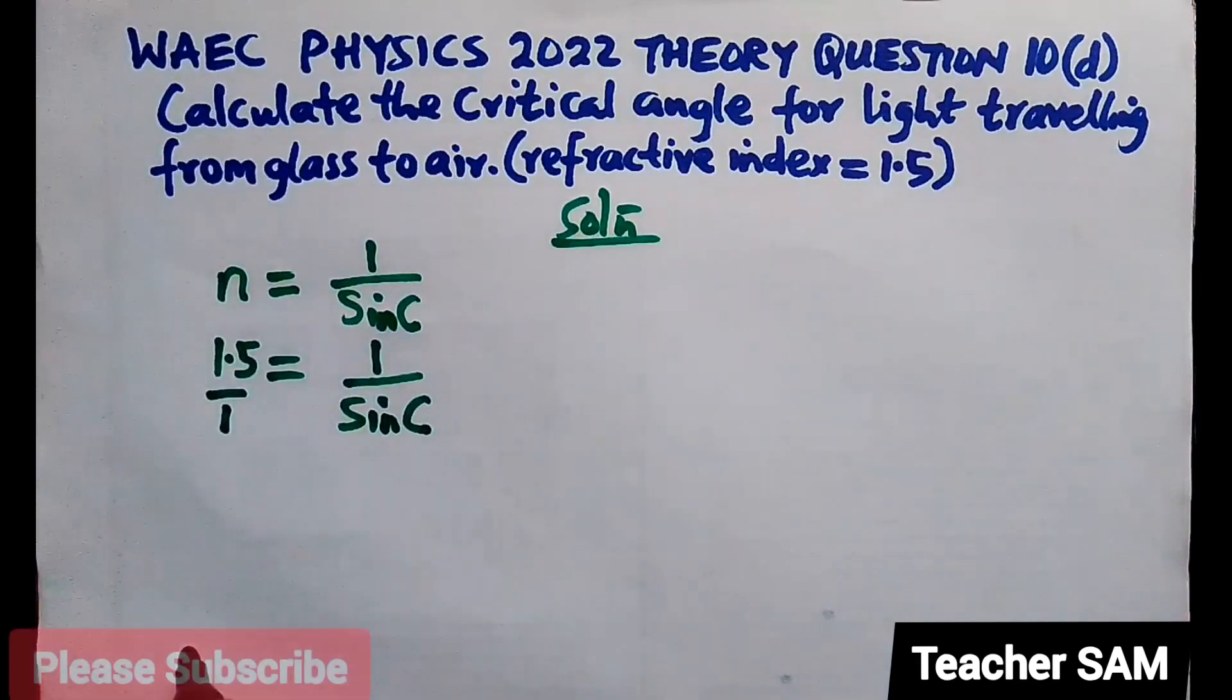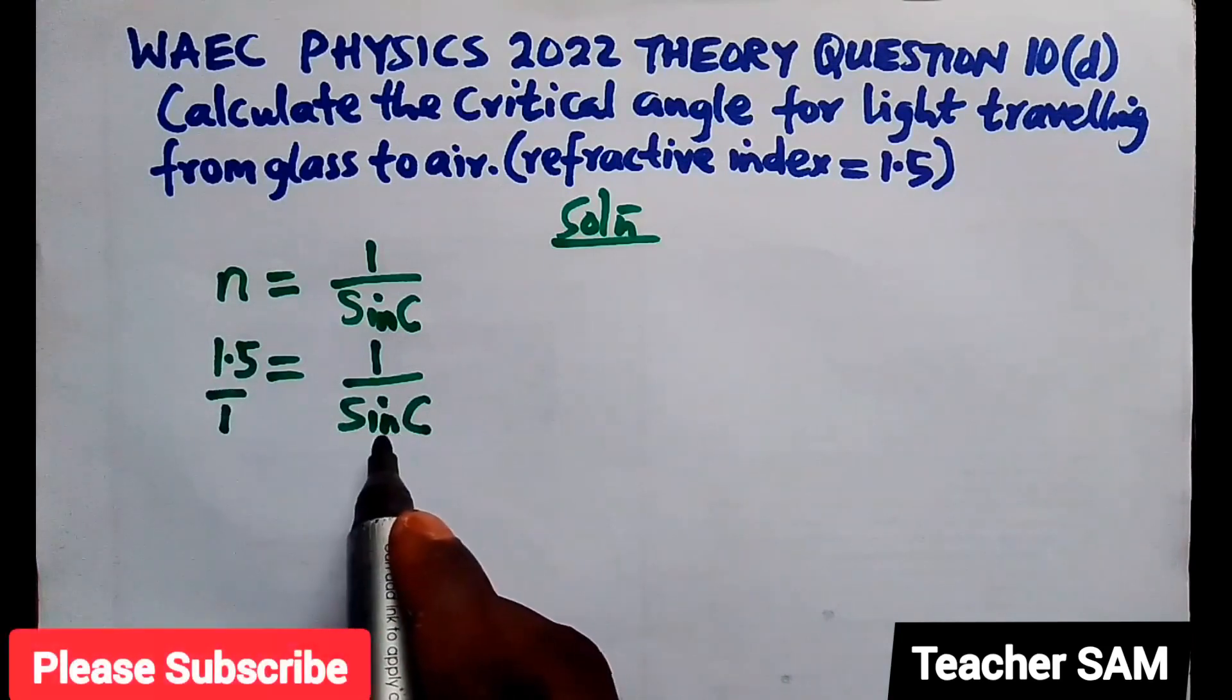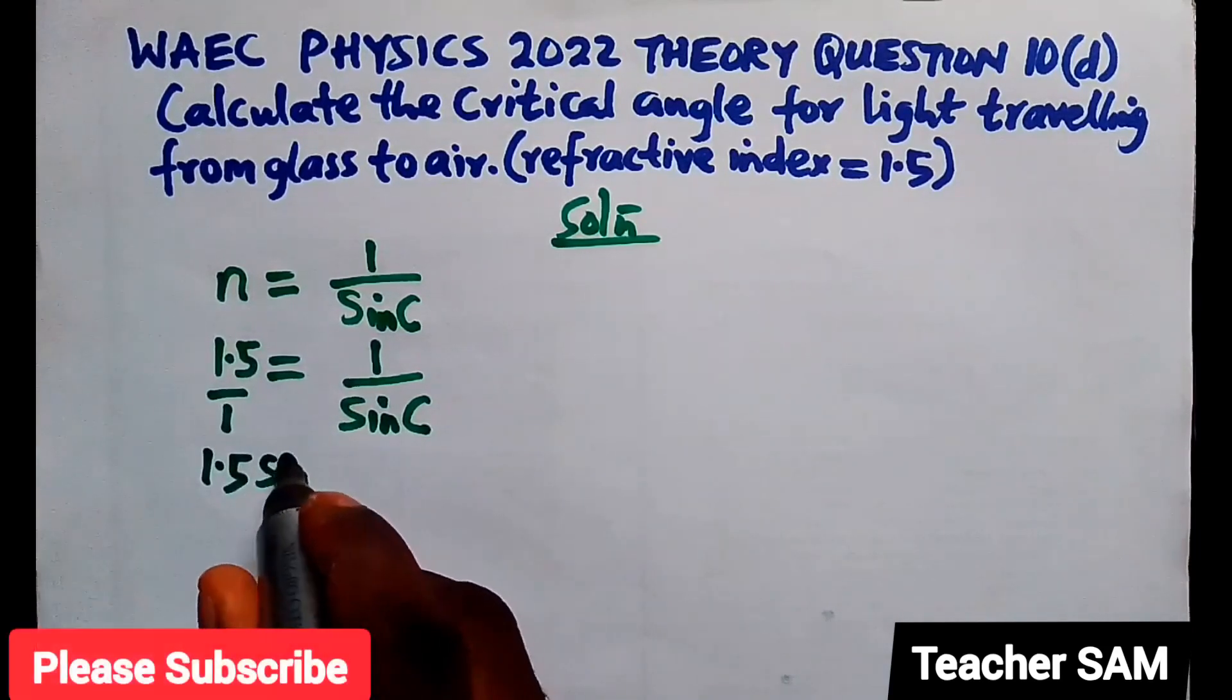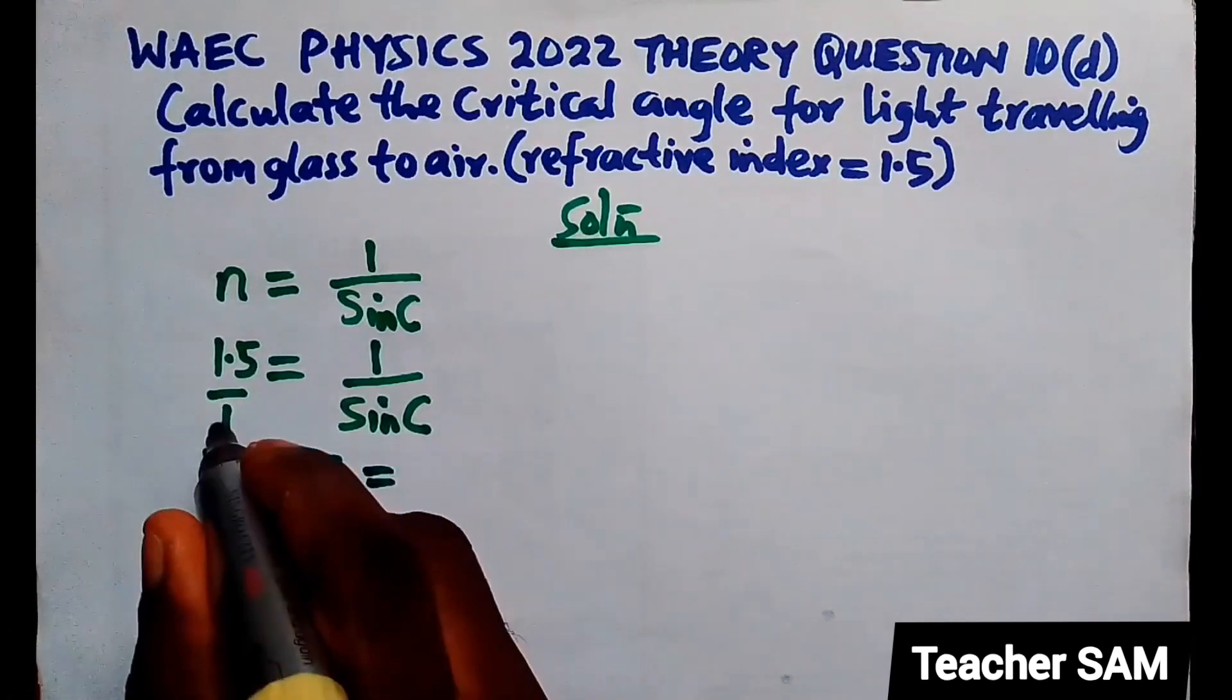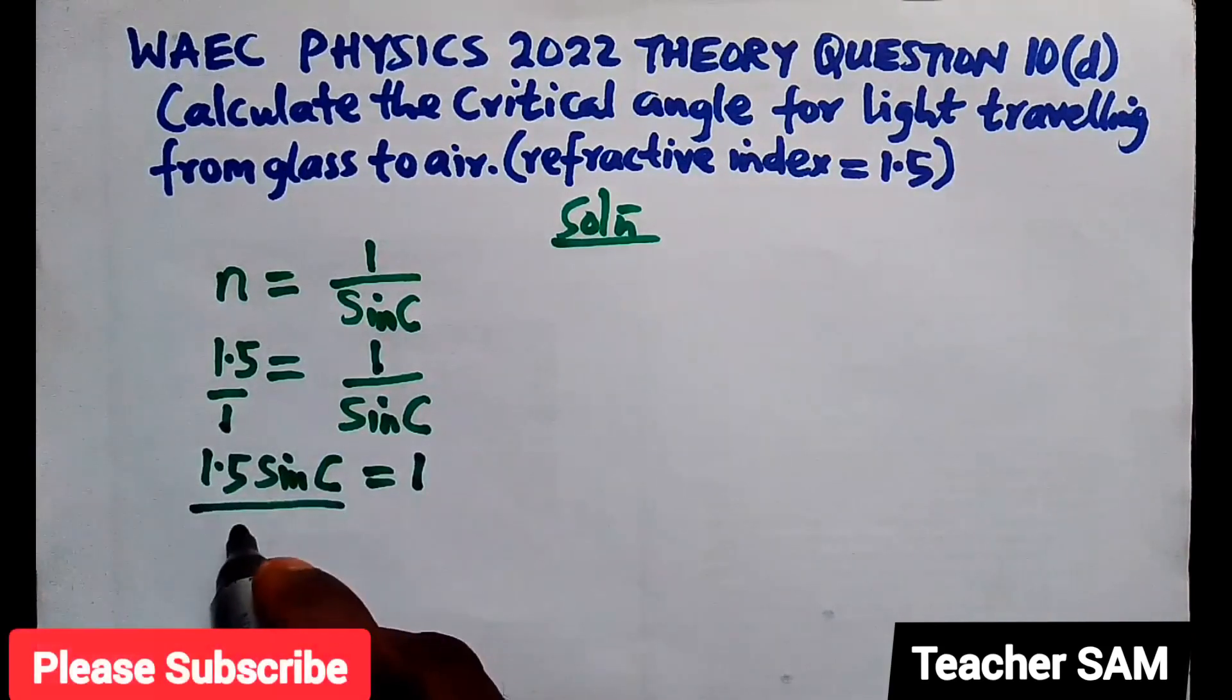We can write this over 1 for simplicity. So 1.5 times sine c equals 1 times 1, which gives us 1.5 sine c equals 1. I'm going to divide both sides by 1.5.